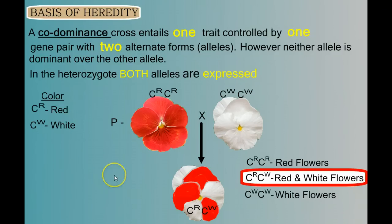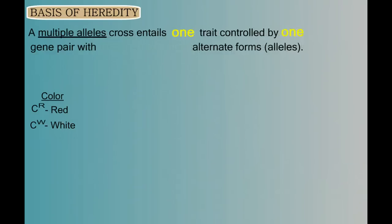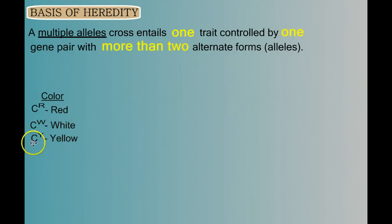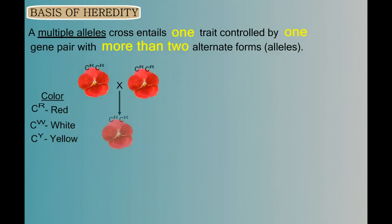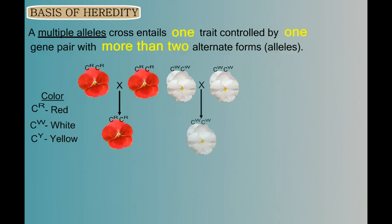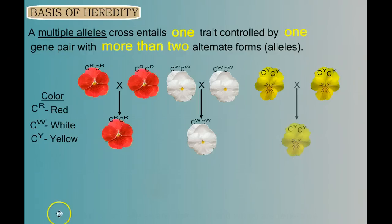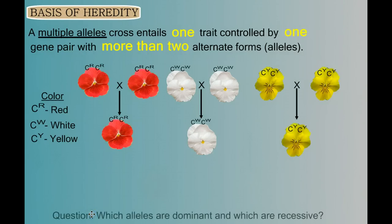Mendel couldn't have seen codominance in the height trait in his pea plants because you can't be both tall and short at the same time. Our next variation is called multiple alleles, where one trait is determined by one pair of genes but we have more than two alleles — more than two alternate forms. So we'll add a yellow allele. When we cross homozygous red with homozygous red we get red; pure white with pure white gives white; yellow with yellow gives yellow. The question is which alleles are dominant and which are recessive — to determine this, we have to perform some test crosses.